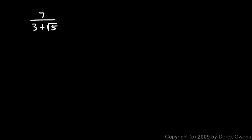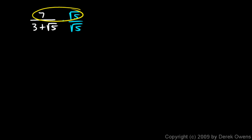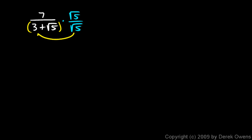Now I'll show you where this is useful. Sometimes you have a radical in the denominator, like 7 over 3 plus the square root of 5. Our goal is to get the radical out of the denominator — we're not allowed to have radicals in the denominator. We can't just multiply by square root of 5 over square root of 5, because when we distribute in the denominator, the square root of 5 times the 3 would still leave a radical in the denominator. So this approach won't work.